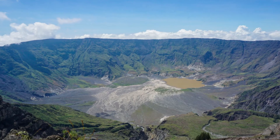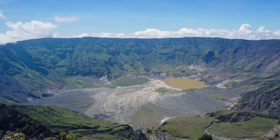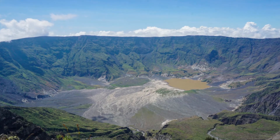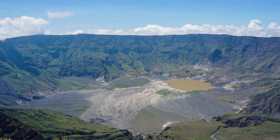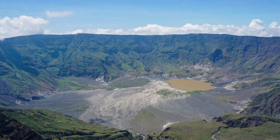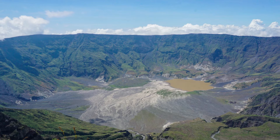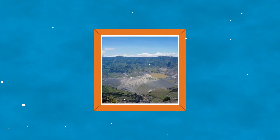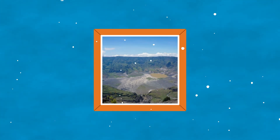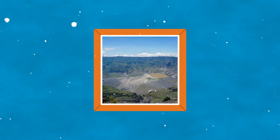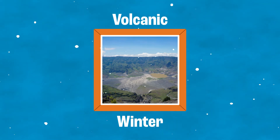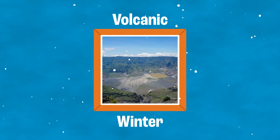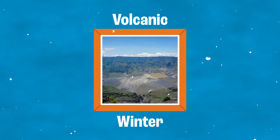Finally, volcanic eruptions can cause changes in temperature. In 1815, Mount Tambora in Indonesia erupted. It was the most powerful eruption in the world for 1,600 years. It released so much ash and sulphuric acid into the atmosphere that it blocked out the sun and caused something called a volcanic winter. Global temperatures dropped and the following year was known as the year without a summer.